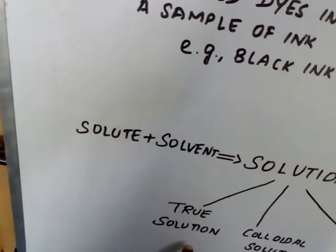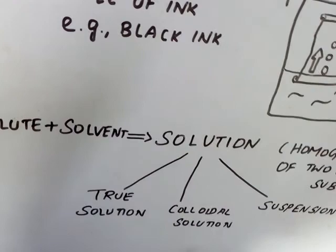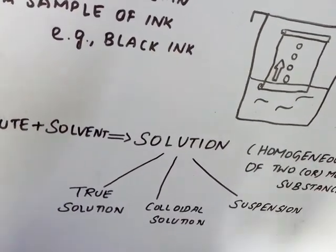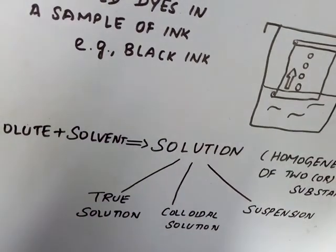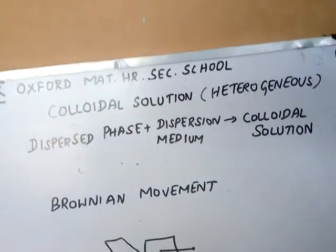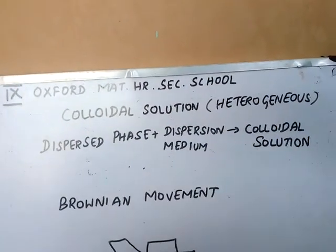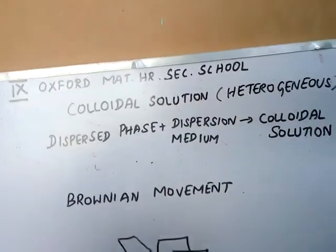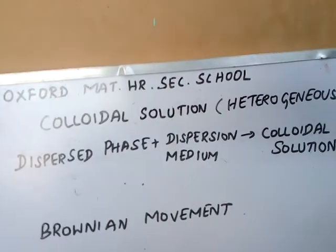So size of the particle is less in true solution. Here, you are not able to see, but it can be viewed under microscope. Suspension, when we are saying, size of the particles are visible. Is it clear students now? For you, true solution generally is called a solution that is given in detail in 10th standard only. Colloidal solution alone is discussed in detail in this topic. Colloidal solution is heterogeneous in nature.